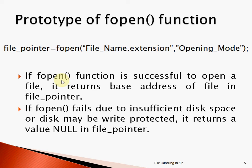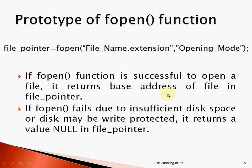Now let's see the prototype of the fopen function. fopen takes two parameters. The first parameter is a string holding the file name with its extension separated by a dot operator — for example, abc.txt. The second parameter is the opening mode in which we want to open the file. If fopen is successful, it returns the base address of the file into a file pointer. So to collect that base address, we must have a file pointer.